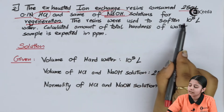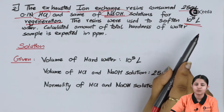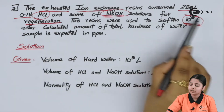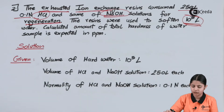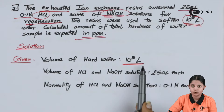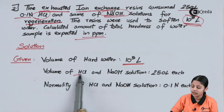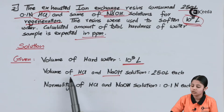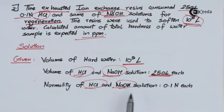Volume of hard water is 10⁵ liters. Volume of HCl is 250 liters and normality of HCl is 0.1 normal. Volume of NaOH is 250 liters and normality of NaOH is 0.1 normal. In the ion exchange method, cation and anion exchangers are regenerated by HCl and NaOH solutions respectively. So 10⁵ liters of hard water corresponds to 250 liters of 0.1 normal HCl, and also to 250 liters of 0.1 normal NaOH.